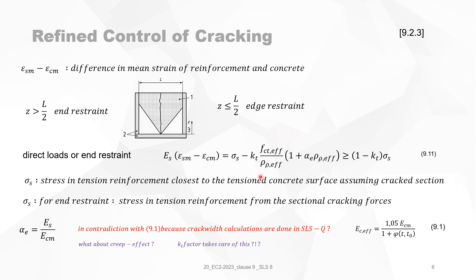There is no creep in this formula. A possible explanation is that the KT factor accounts for long-term or short-term loading, and the creep effect is already embedded within KT. So Alpha must not account for creep separately, otherwise creep would be counted twice. The second reason, as stated in the background document, is that the effect of creep on crack width is negligible.